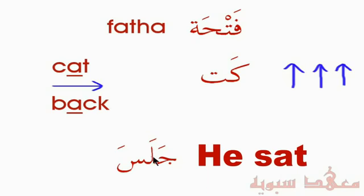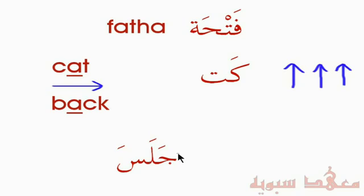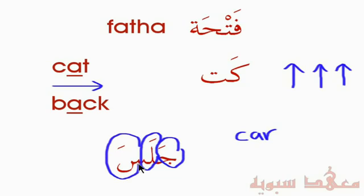Notice we don't elongate — there's no elongation of the A sound. For example, when we say 'Car,' it's elongated. That's written differently in Arabic and we'll explain that later. The Fatha is a quick, short sound. So it's Ja-La-Sa, not Jaa-Laa-Saa. There's no elongation.